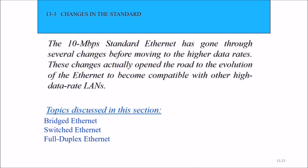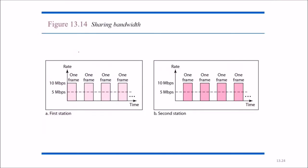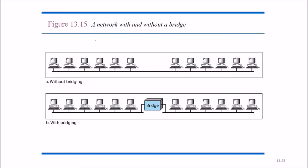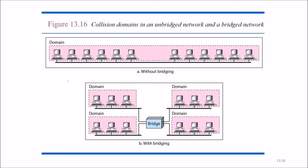Then there were changes in the standard. The 10 Mbps standard Ethernet has gone through several changes before moving to the higher data rates. These changes actually opened the road to the evolution of the Ethernet to become compatible with other high data rate lines. In this we had bridged Ethernet, switched Ethernet, and full duplex Ethernet. They are sharing the bandwidth. A network without bridge, this is without bridge, and this is with a bridge. We have a bridge in between. The collision domains in an unbridged network and a bridged network. This is how collisions are avoided or handled.